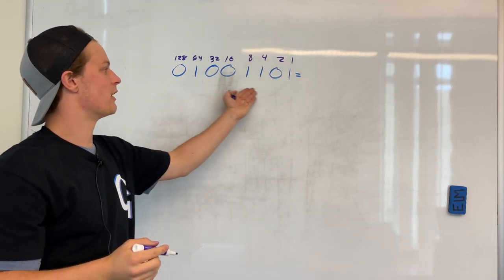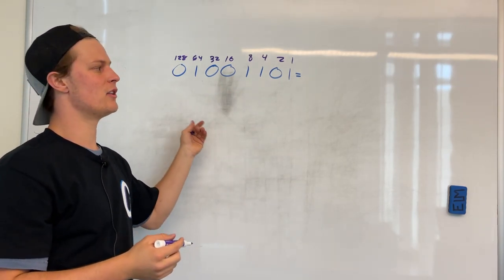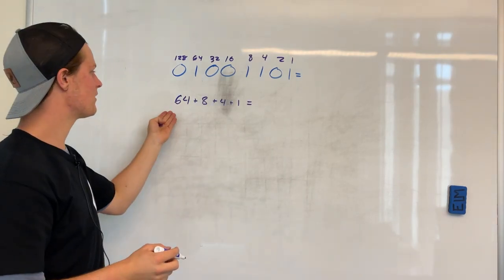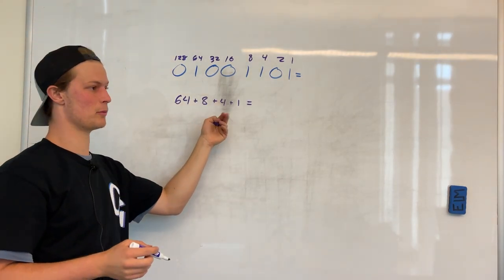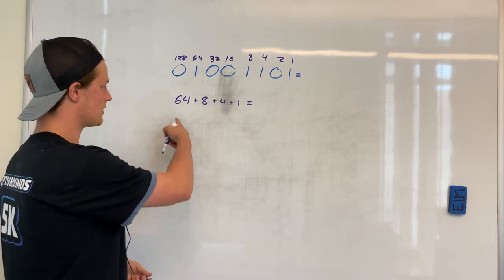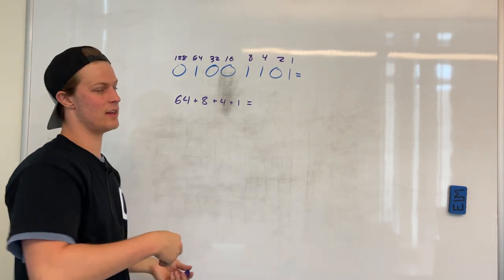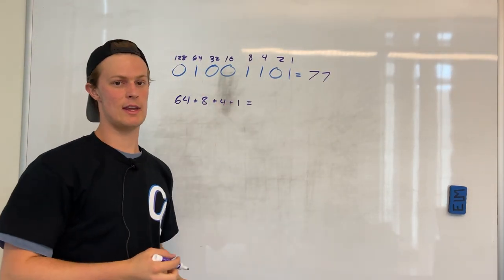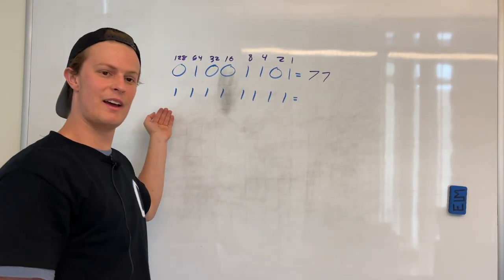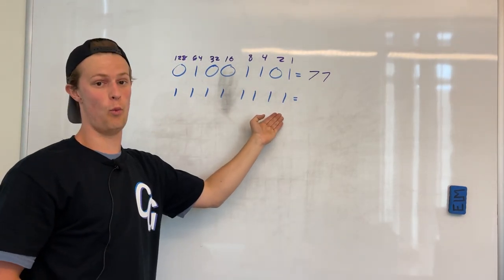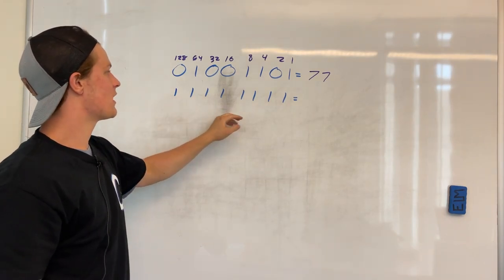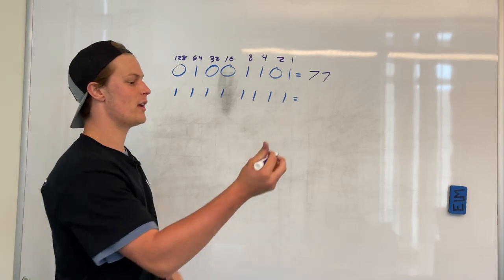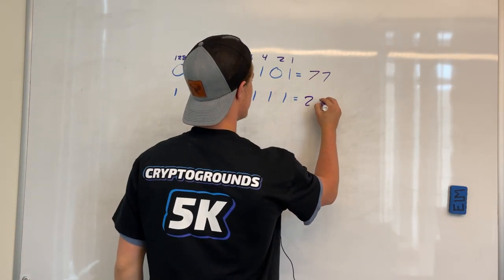Now let's convert this 8-bit number to base 10 using the quick shortcut method. We identify which bits are 1 and add their values: 64 + 8 + 4 + 1 = 77. So this binary number is 77 in base 10. Now if all 8 bits are ones, we add 128 + 64 + 32 + 16 + 8 + 4 + 2 + 1 and get 255. So the maximum value for this 8-bit binary number is 255, which occurs when all bits are 1.